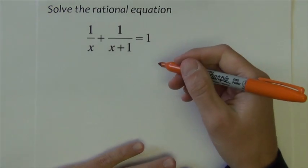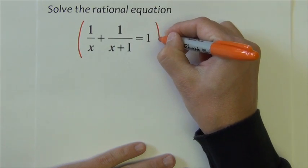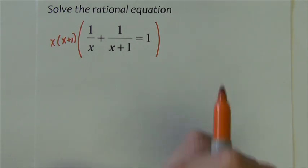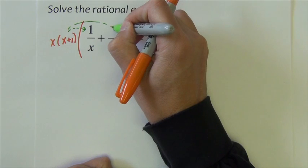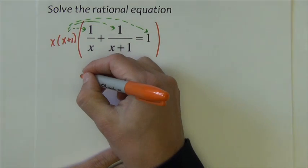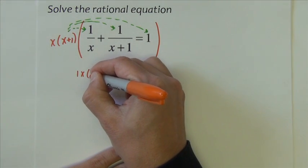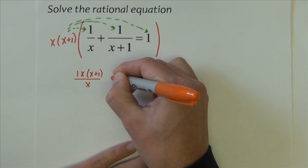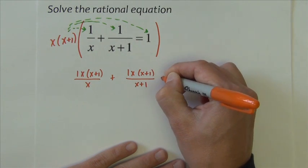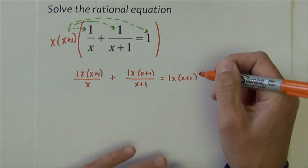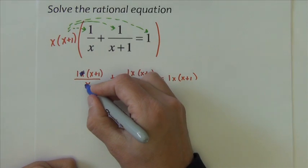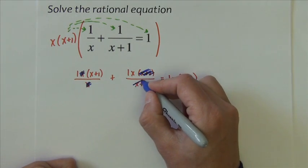Alright, this next problem, I again begin by multiplying by a common denominator. The common denominator is x and x plus 1. So that x, x plus 1 is going to distribute here, here, and there. Let me write how that would look. I would have 1x(x+1) over x, plus 1(x+1), equals 1x(x+1). Now I'm going to divide out everything that can reduce, everything that can divide out. So this x takes away that one. This x plus 1 takes away this x plus 1.